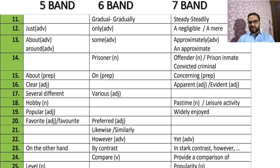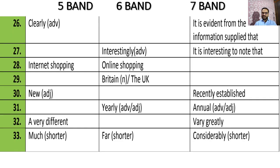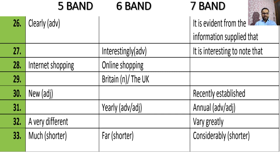For 'favorite,' the advanced alternatives are 'preferred' or 'most enjoyable.' For 'clearly,' the Band 7 phrase is 'it is evident from the information supplied that.' For an adverb like 'interestingly,' you can write 'it is interesting to note that.' For 'internet shopping,' Band 6 uses 'online shopping,' while Band 7 can use 'cyber shopping.' For 'Britain,' you can use 'United Kingdom.' For 'new,' the adjective alternative is 'recently established.' For 'yearly,' the advanced adjective is 'annual.'